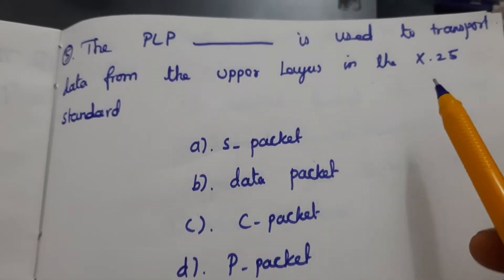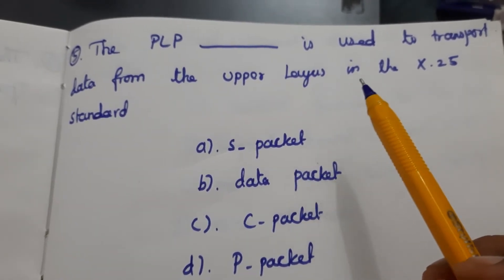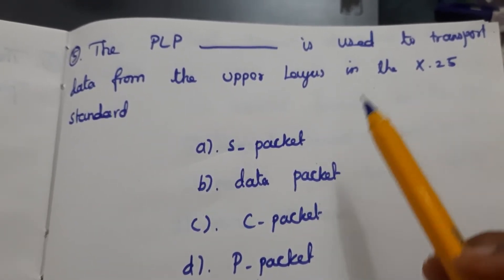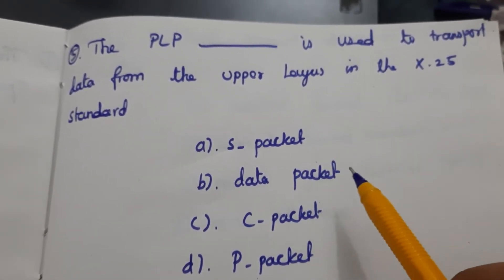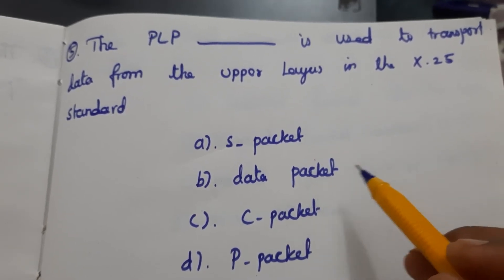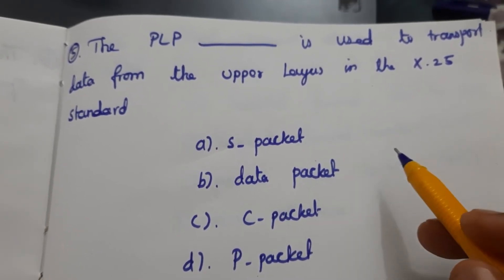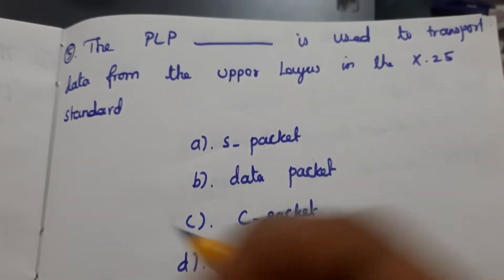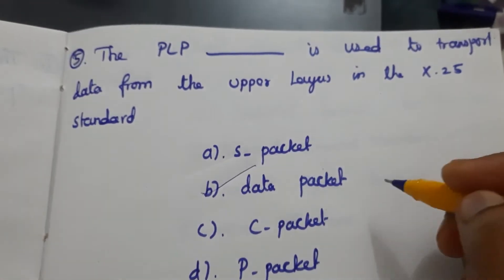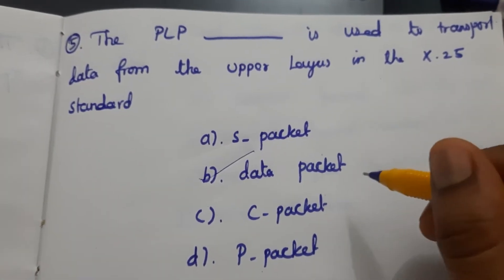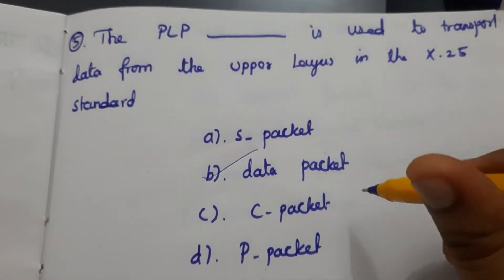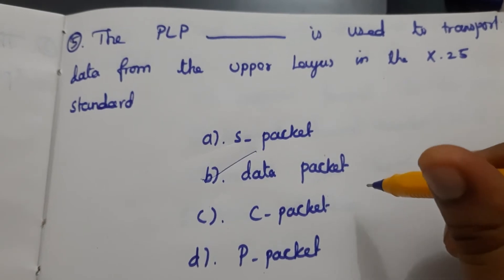Fifth question: The PLP (Packet Layer Protocol) is used to transport data from the upper layer in the X.25 standard. It uses a data packet to transmit the data, so B is the answer.